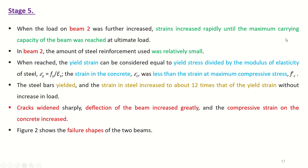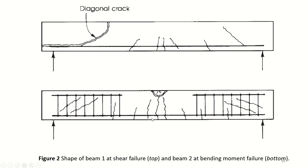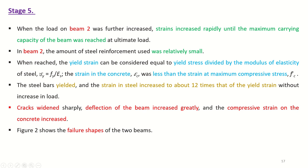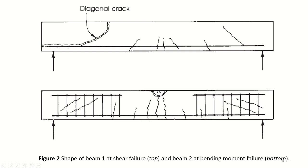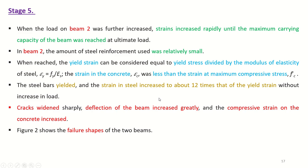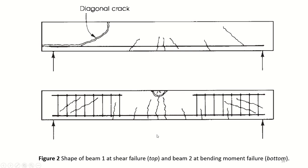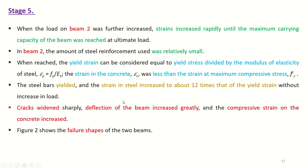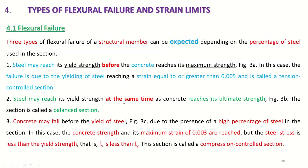Stage 5: In Beam 2, as load further increased, the amount of steel reinforcement was relatively small. When the tensile reinforcement reached the yield strain (equal to yield stress divided by elastic modulus of steel), the concrete strain was still less than that at maximum compressive stress — meaning the tension reinforcement fails first, then compression concrete fails afterwards. The steel bars yielded, strain increased to about 12 times the yield strain, cracks widened sharply, deflection increased greatly, and compressive strain in concrete increased. These were the five stages describing crack generation and propagation to failure.